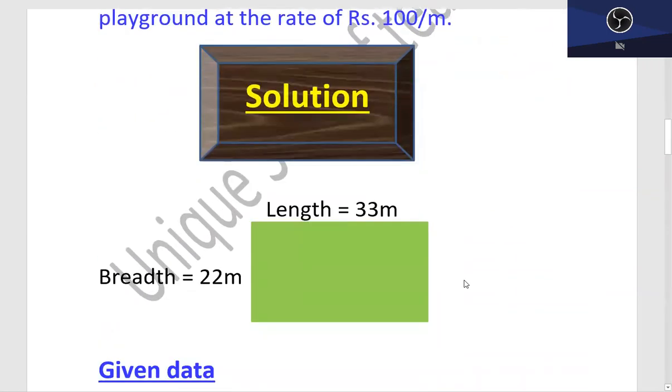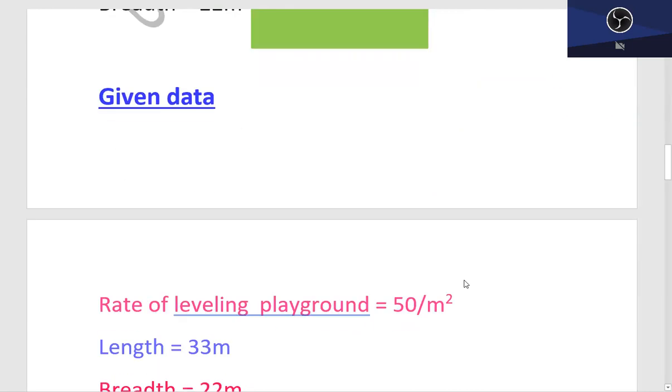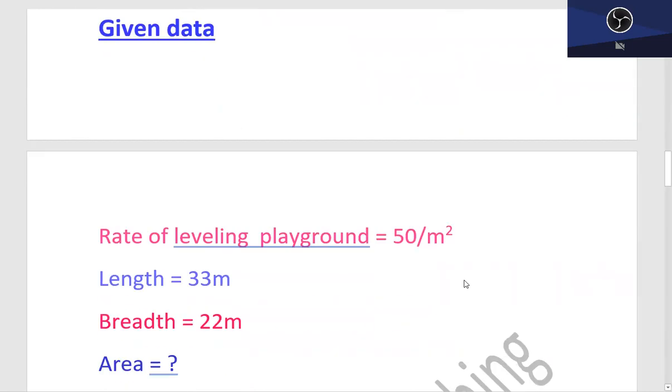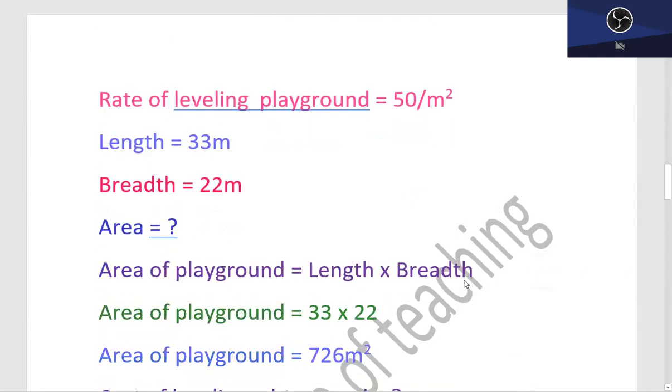In the solution, first of all, I have a rectangle which has the length of 33 meter and the breadth is 22 meter. Moreover, the given data rate of leveling playground is 150 rupees per meter square, and length is 33 meter and breadth is 22.